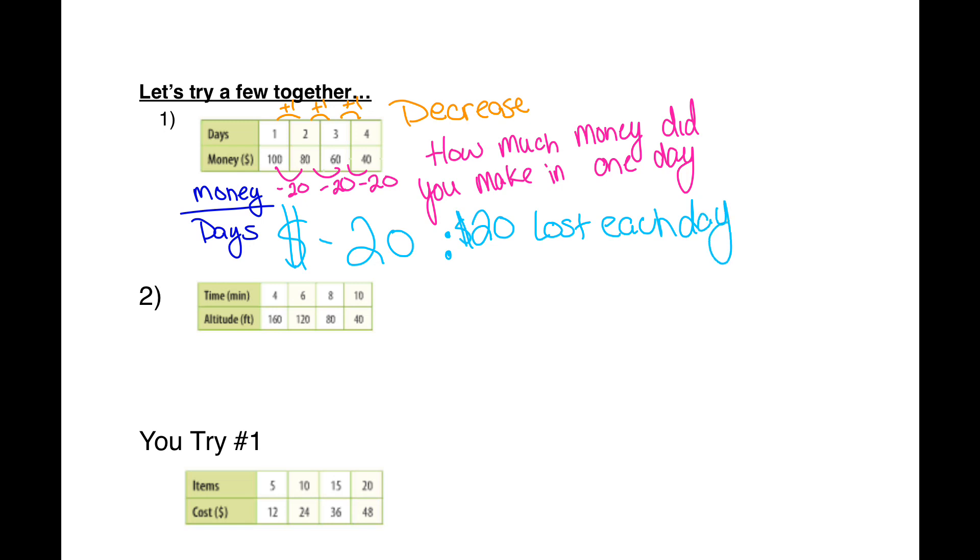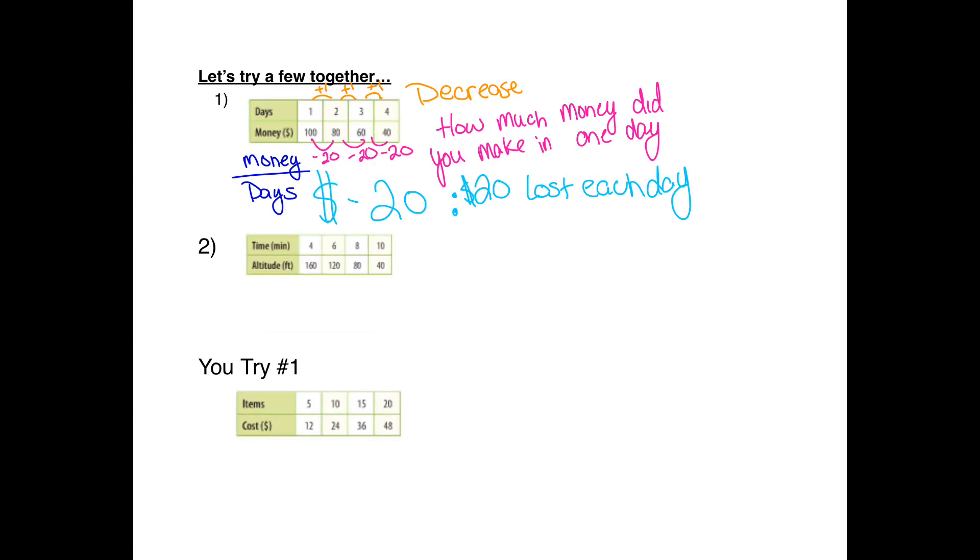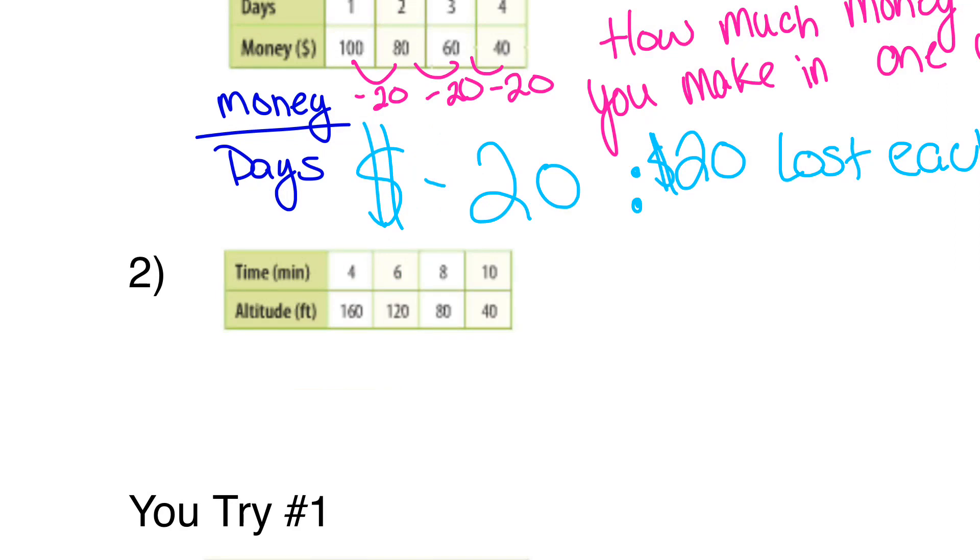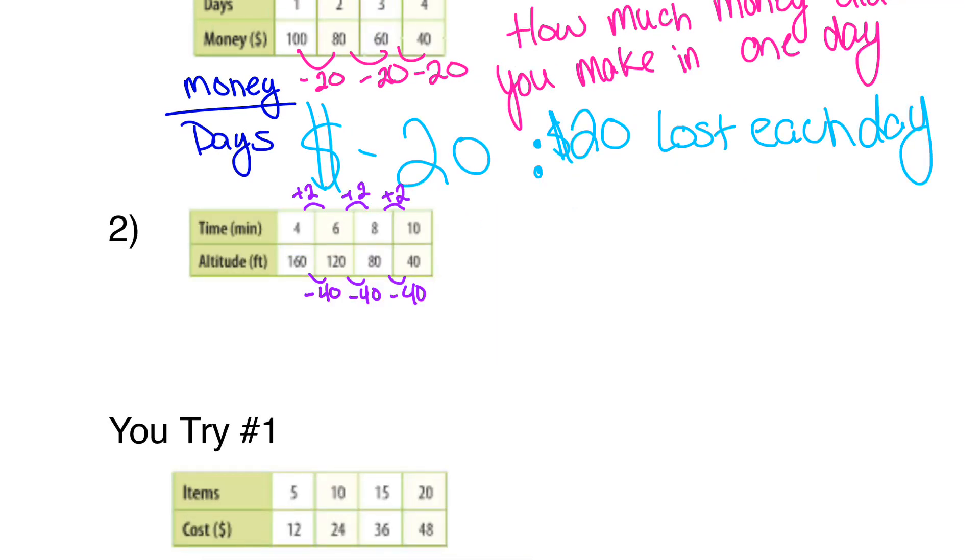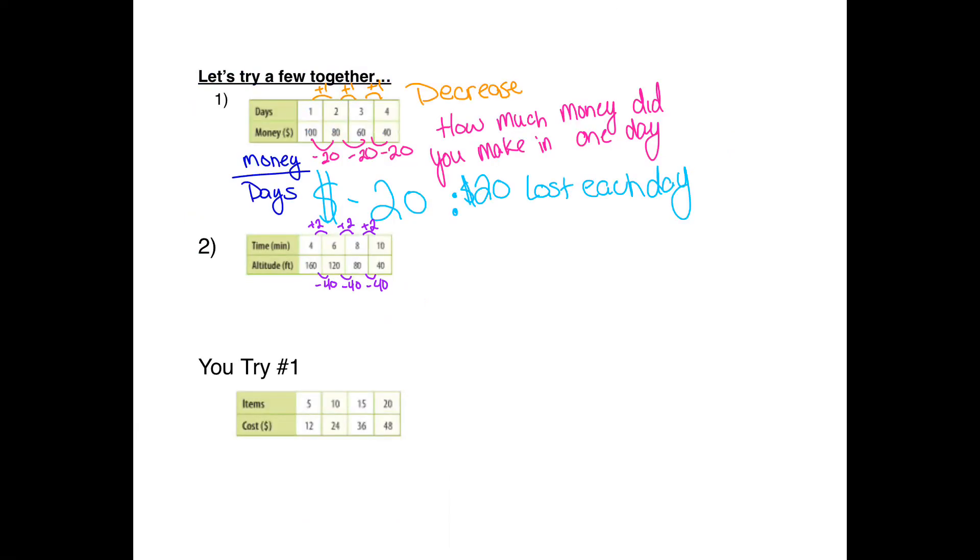The whole point of constant rate of change is that you want to set it up as a fraction so you can get it as simple as possible. Say how much did you increase or decrease by for each number. This is minus 40, minus 40, minus 40, and plus 2, plus 2, plus 2. As the time increases, your altitude decreases. Go ahead and make sure you do the you try.